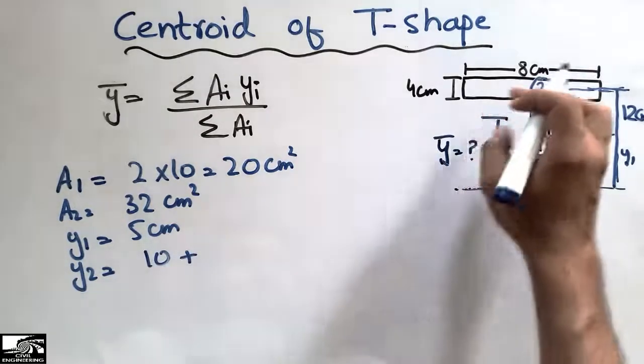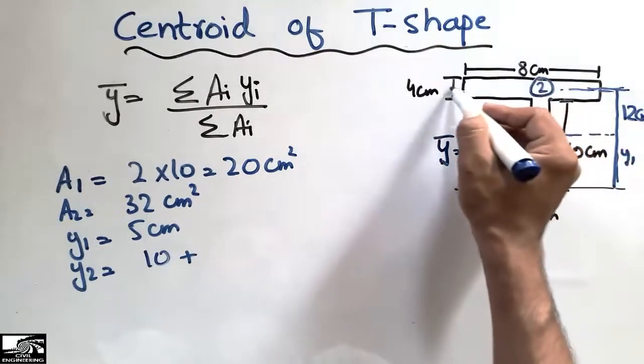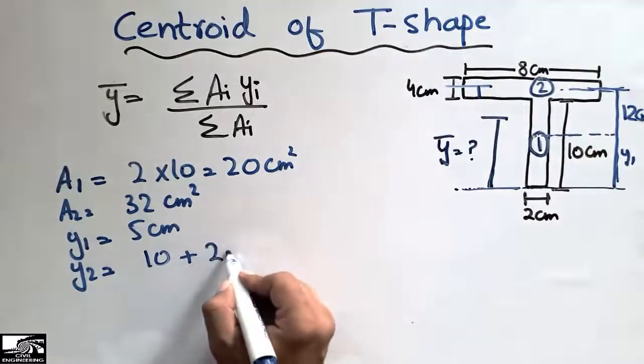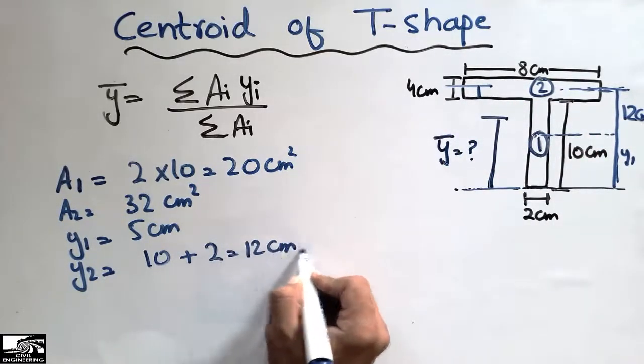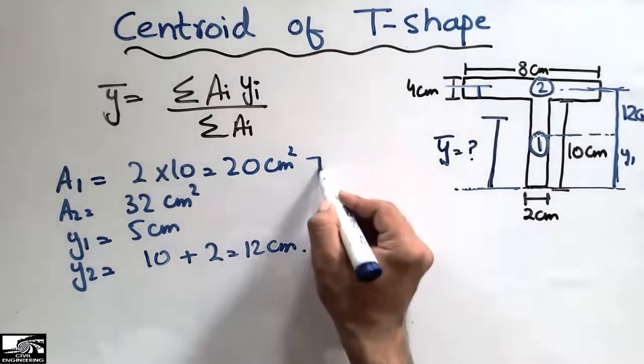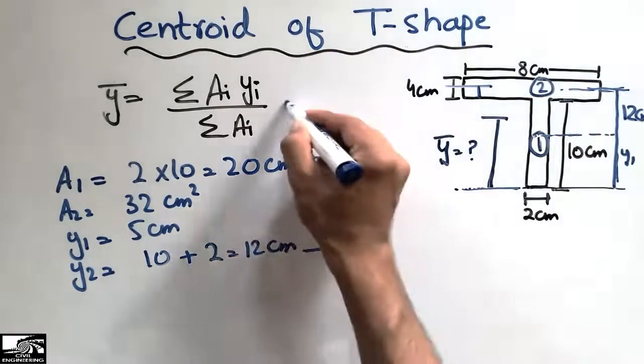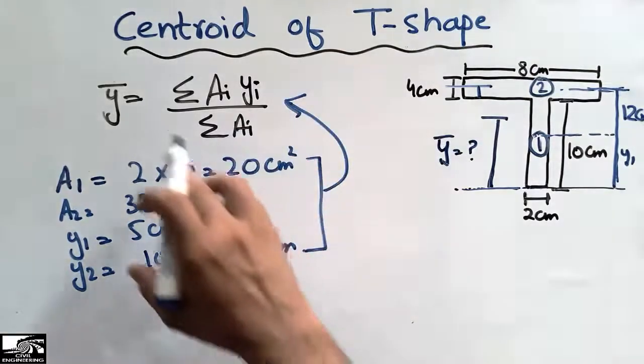10 plus 2, I get 12 centimeter. Now I will put all these values into this equation and solving this equation I will find the centroid of this T-shape.